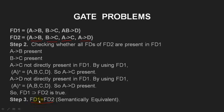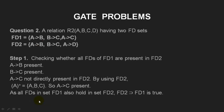Since both conditions hold, FD1 and FD2 are semantically equivalent. Now we will look at one more problem. You have been given a relation R2 with attributes A, B, C, D and two FD sets FD1 and FD2. First, we check whether we can determine FDs in FD1 from FDs in FD2. A→B and B→C are present in FD2. A→C is not directly present, but using the closure of A in FD2: A determines B, B determines C, so A can determine C. That means FD2 is a superset of FD1.